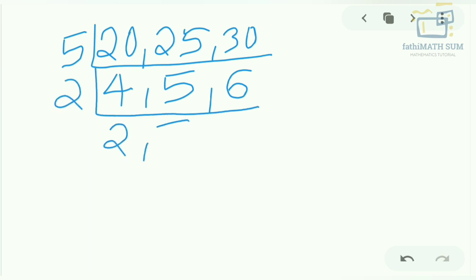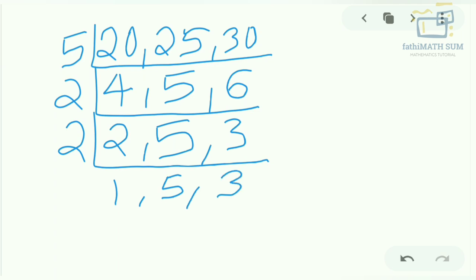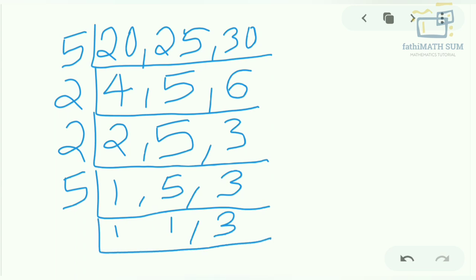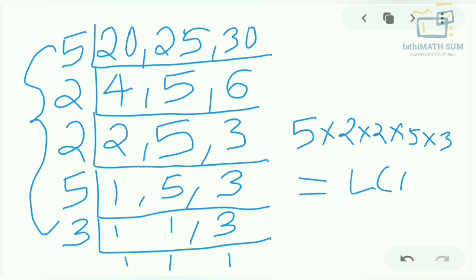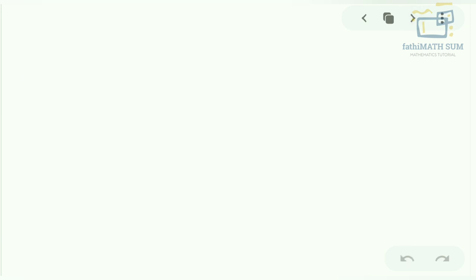In the next step, take 2: 4 is divisible by 2 giving 2, 5 is kept as-is, and 6 gives 3. Now we have 2, 5, 3. Taking 2 again: 2 gives 1, 5 is kept, and 3 is kept. Next, take 5: 5 gives 1, 3 is kept. Finally, take 3: gives 1. The numbers on the left side are 5, 2, 2, 5, 3. Multiplying: 5 × 2 × 2 × 5 × 3 = 300, which is the LCM of 20, 25, and 30.